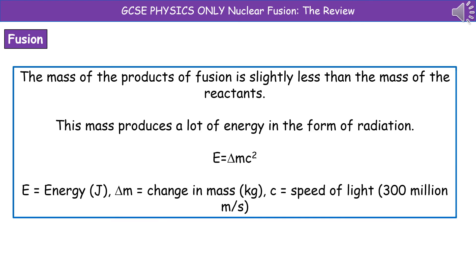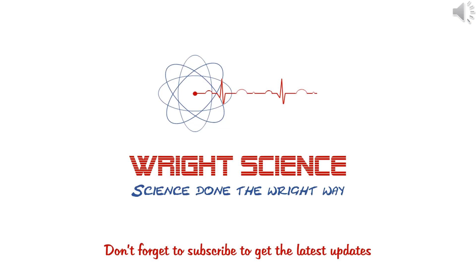In terms of our fusion reaction, the mass of the products of fusion is slightly less than the mass of the reactants, and this change in mass produces a lot of energy in the form of radiation, which we can understand by E = ΔMc². The E is the energy, delta m is your change in mass in kilograms, and c is our speed of light, which is 300 million metres per second. You can substitute in the change in mass and multiply that by 300 million metres per second squared, and that gives you your energy, which as you can see is going to be huge.